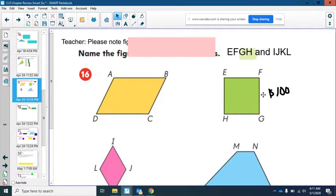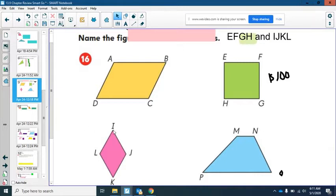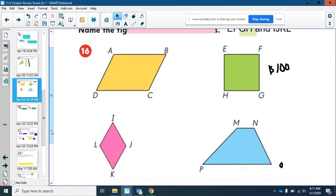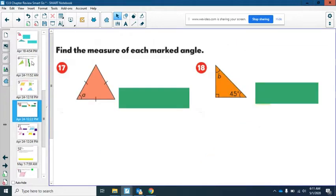And this is E, F, G, H, and I, J, K, L. We will move on to the next one. And this one here, find the measure of each marked angle. So go ahead and look at the clues this gives you and the clues that this gives you. And in 17, you want to figure out the measure of angle A. And in 18, you want to figure out the measure of angle B. And we'll call this one $200.